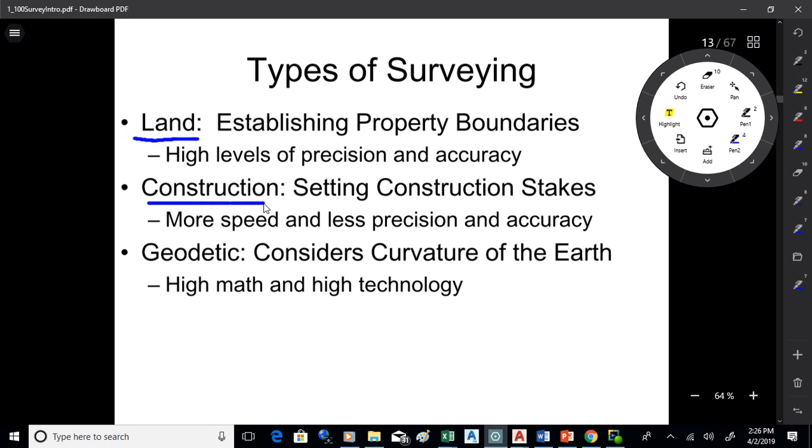Construction is another type of surveying. What you do in construction surveying is set up control and set construction stakes. It's faster and less precision and accuracy than land. If you're setting somebody's property corner, you want that right on the mark. But if you're setting a reference point to put a manhole in the ground, you can get within a pie plate and you're good.